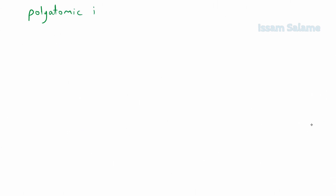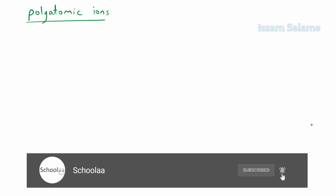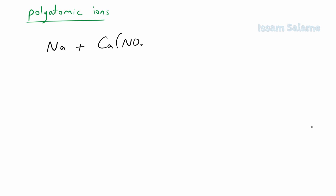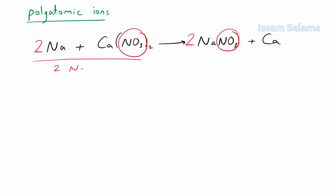In the last part, we talk about polyatomic ions. For the reaction of sodium with calcium nitrate to produce sodium nitrate and calcium: nitrate is a polyatomic ion, and we treat it as a single unit. We have 2 units on the left and 1 on the right, so multiply the right side by 2. Then multiply sodium on the left by 2 to balance sodium. Checking both sides: 2 sodium, 1 calcium, 2 nitrogen, and 6 oxygen atoms — the equation is balanced.